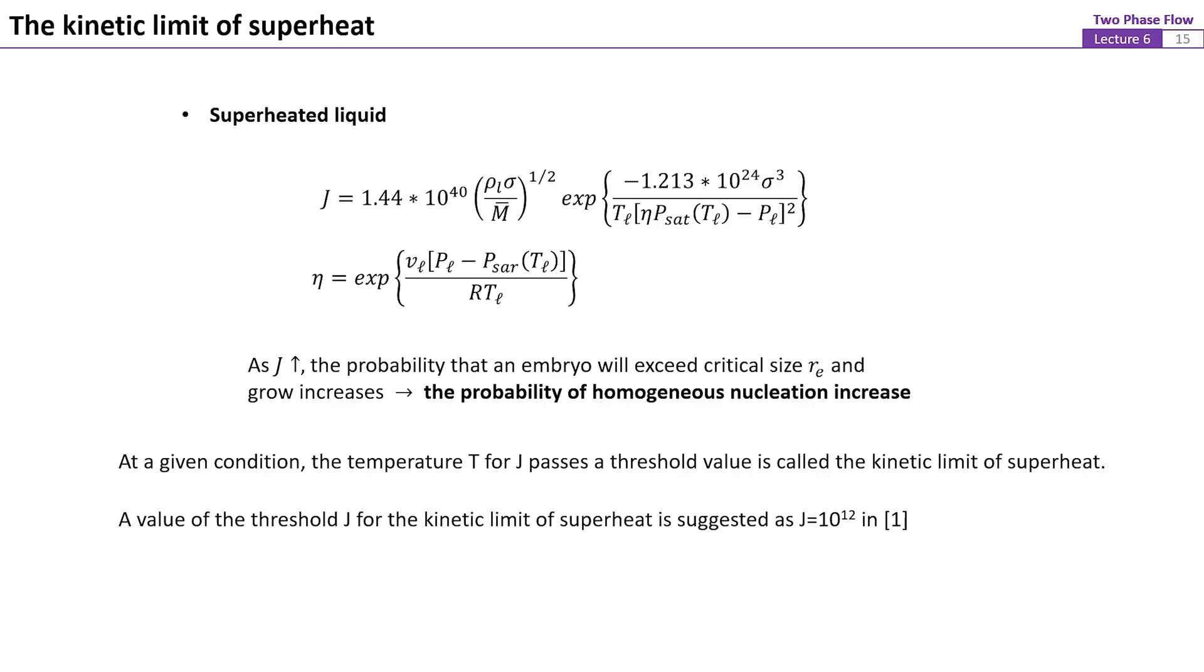Typically, a change of 1 degree C of temperature can change J by as much as 3 to 4 orders of magnitude. As J increases, the probability that the embryo will exceed critical size Re and grow increases. With a suitable choice of the threshold value of J, a corresponding temperature for the kinetic limit of superheat can be estimated. This temperature is the threshold that once the liquid is superheated above this value, homogeneous nucleation will likely occur almost immediately or, say, spontaneously.